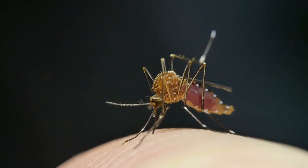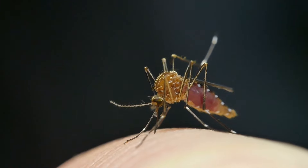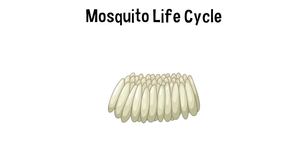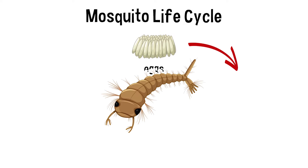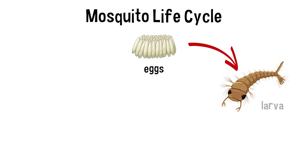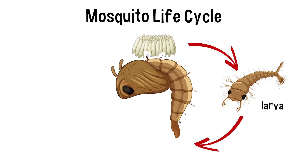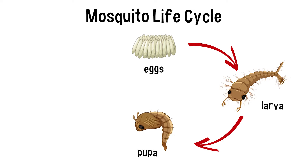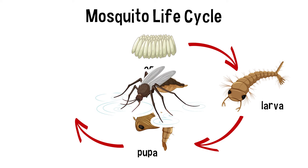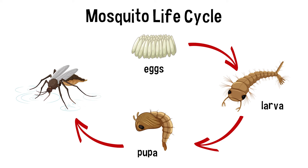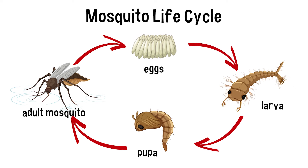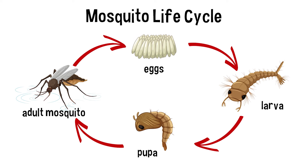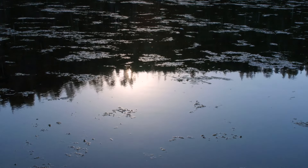There are around 3,000 different species of mosquitoes that all undergo the same four-stage life cycle: egg, larva, pupa, and adult. In all species, the larva and pupa stages are aquatic.